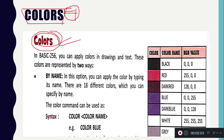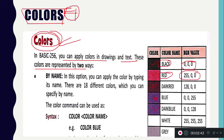In Basic 256, you can apply color in drawing in two ways: either you give the color's name in the command, or you provide its RGB value. RGB value means Red, Green, Blue value. Basically, there are three primary colors, and all other colors are made by mixing these.